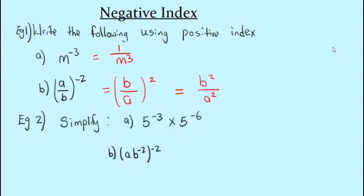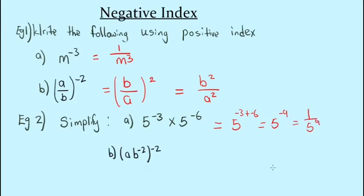Next example: simplify five to the negative three multiplied by five to the negative six. When multiplying two terms with the same base, we add the powers: negative three plus negative six equals negative nine. We then reciprocate to get rid of the negative, giving one over five to the ninth power. Since we're asked to simplify, we leave it here.